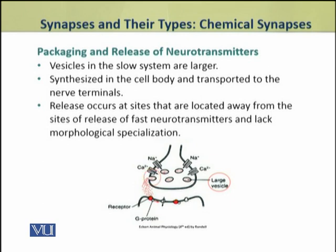The sites of release of slow neurotransmitters lack morphological specializations, meaning we cannot morphologically identify these as sites of slow neurotransmitter release.